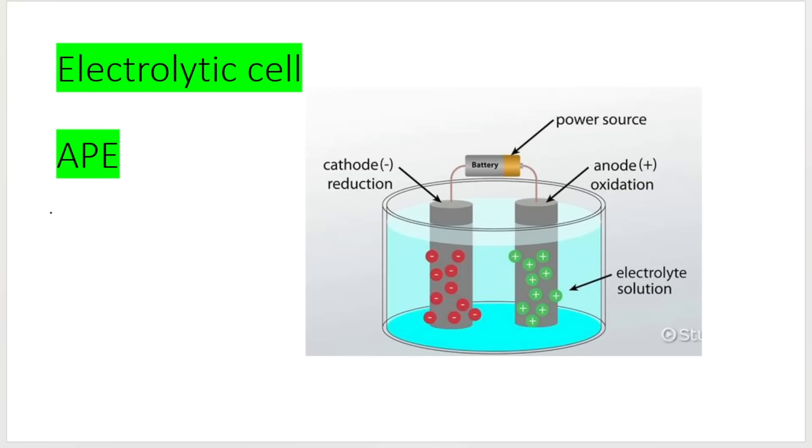Just like with the galvanic cell, anox and red cat is true. And remember, if you can't remember what that stands for, it's anox at the anode. That's where oxidation occurs. So this over here is my anode. The process of oxidation, so the loss of electrons, will take place at the anode. And red cat, reduction, the process of reduction takes place at the cathode. So the gaining of electrons takes place at the cathode.